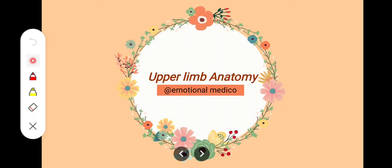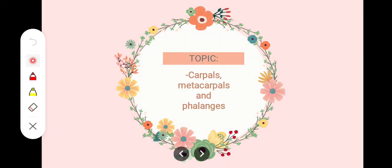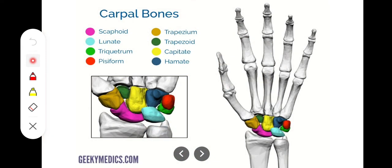In this video we'll take a look at the carpals, the metacarpals, and the phalanges, which are the bones of the hand. The phalanges are the bones of the fingers, the metacarpals are the bones of the distal palm, and the carpals are the bones of the proximal part of the palm.